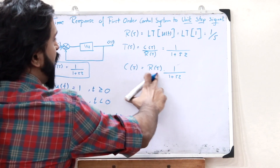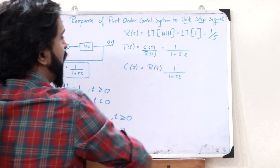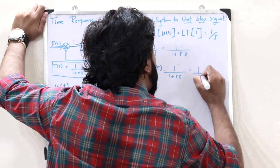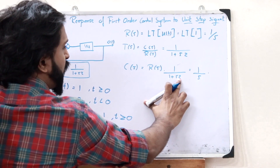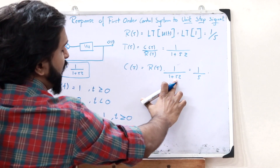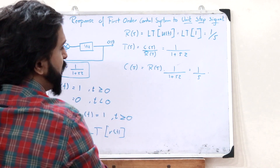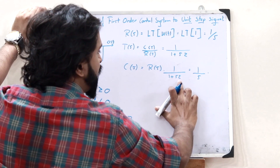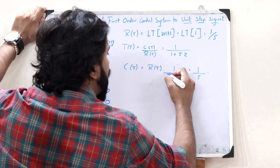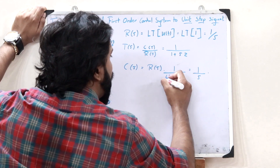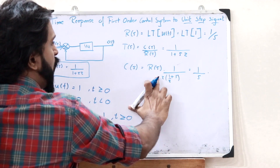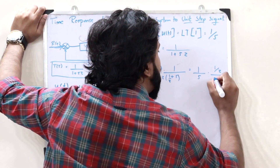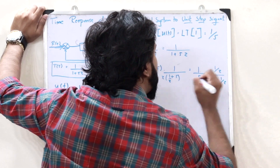We know r(s) = 1/s, so c(s) becomes 1/s multiplied by 1/(1 + s·τ). We need the coefficient of s to be 1, so let us take τ common outside, giving c(s) = (1/τ) / [s · (s + 1/τ)].